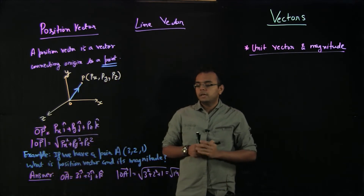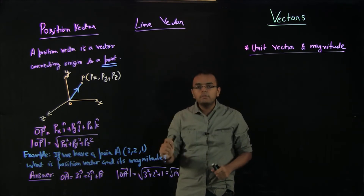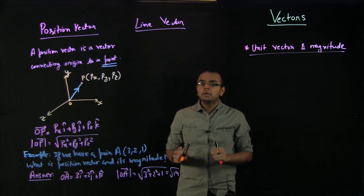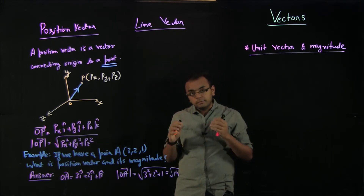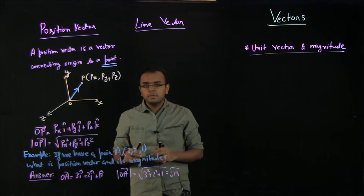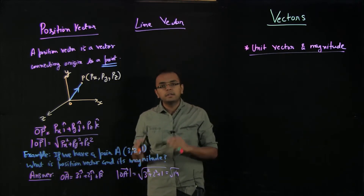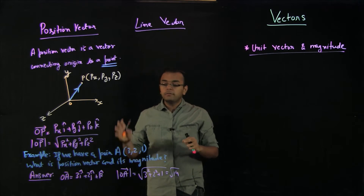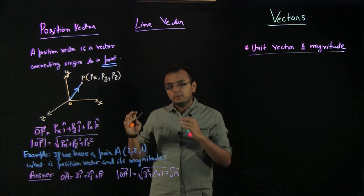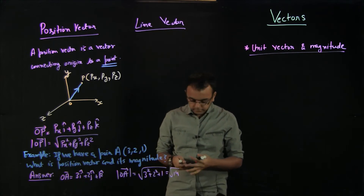Just to give you a very quick example — position vector is always and always for a point. Position vector is always for a point. Please do not forget this very basic definition of position vector. It will sometimes happen during the chapter of vectors that we get confused if you forget this point. So please try to remember that position vector is always and always for a point.